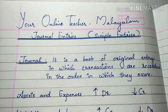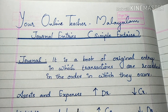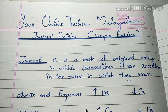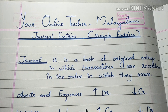A journal is a book of original entry in which transactions are recorded in the order in which they occur. What is written in a journal — that entry is called a journal entry.